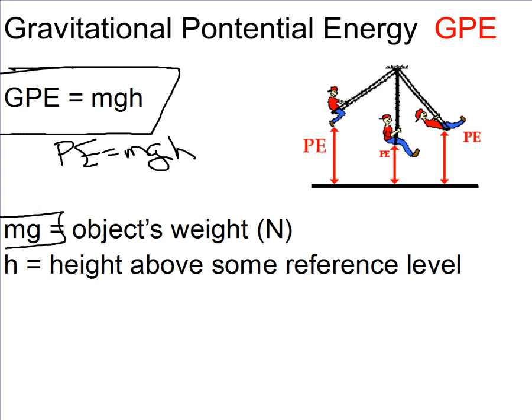Where MG, you remember, is the weight of the object. So that's FG. And H is the height above some kind of arbitrary reference level.